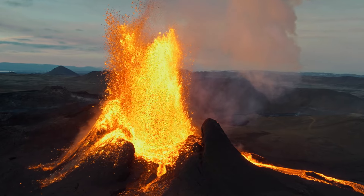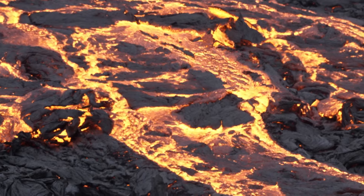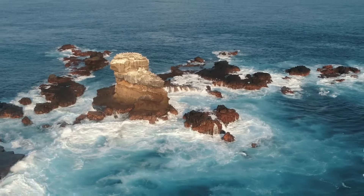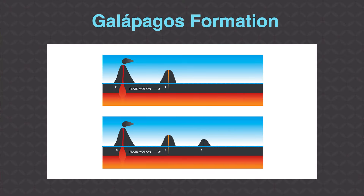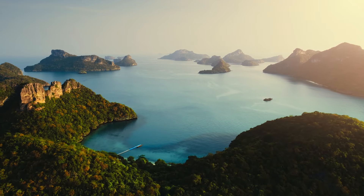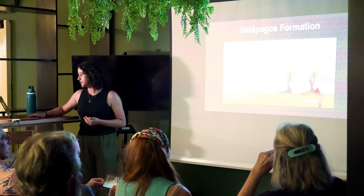The lava erupts to the surface, and when lava touches the water it solidifies and forms islands or volcanoes. Eventually the tectonic plate moves, the volcano is no longer active, but the hot spot continues to erupt, forming another island. As the plate moves we begin to see a chain of islands, which is what we see in the Galapagos.